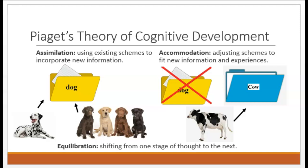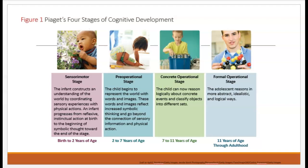Over time, this process of assimilation and accommodation helps children switch from one stage of cognitive development to the next, which Piaget referred to as equilibration. These are the four stages of cognitive development Piaget proposed: the sensorimotor stage, the pre-operational stage, the concrete operational stage, and the formal operational stage. Each stage is characterized by how the child mentally interacts with the world and what milestone mental abilities they achieve while in that stage.